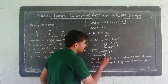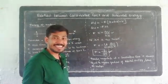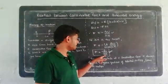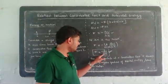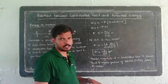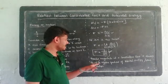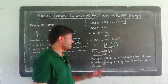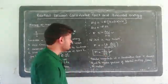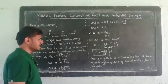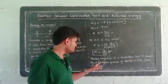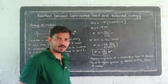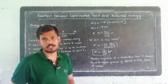If we consider d by dx, that should be the gradient in the one-dimensional case. Therefore, the conservative force is always equal to the negative gradient of potential energy. In one-dimensional motion, conservative force is always equal to negative gradient of potential energy.